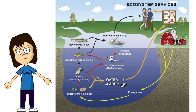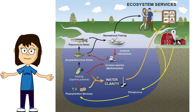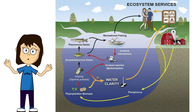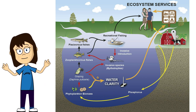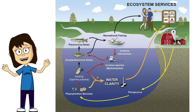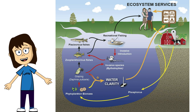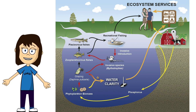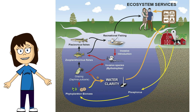So what does all this food web ecology mean for humans? It causes a decline in water clarity, and it's been estimated that a one-meter loss in water clarity is valued at about $140 million. We can actually put economic value on the costs of food web changes, and especially the cost of invasive species.